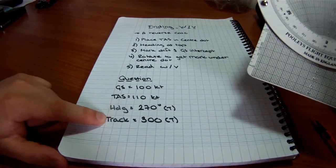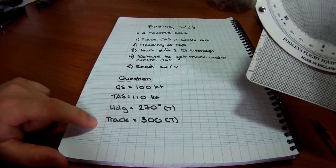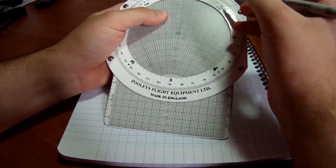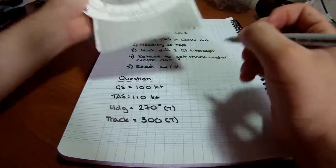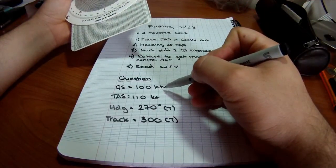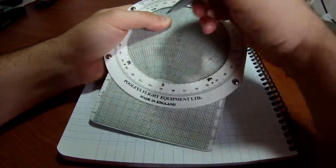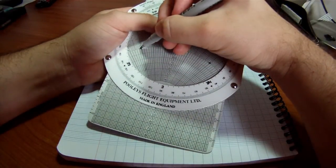The drift is going to be the difference between the heading and the track as we talked previously. So that's 30 degrees. So it's going to be 30 at a ground speed of 100 knots. So 100 knot line, 30 degrees, and I'm going to mark both sides irrelevant of which direction the wind is coming.